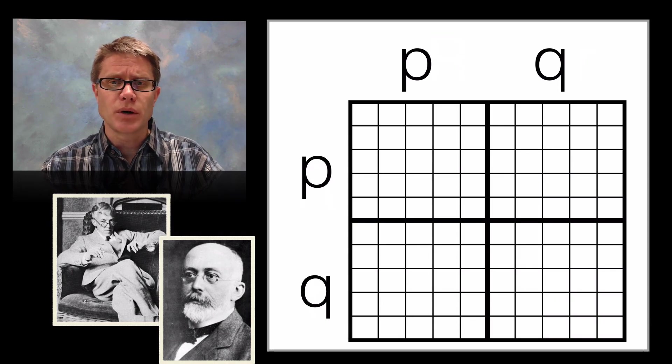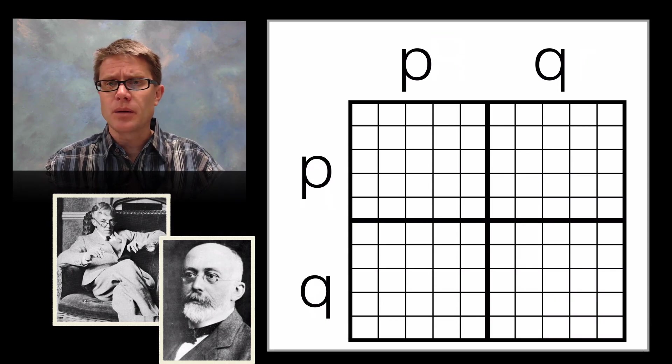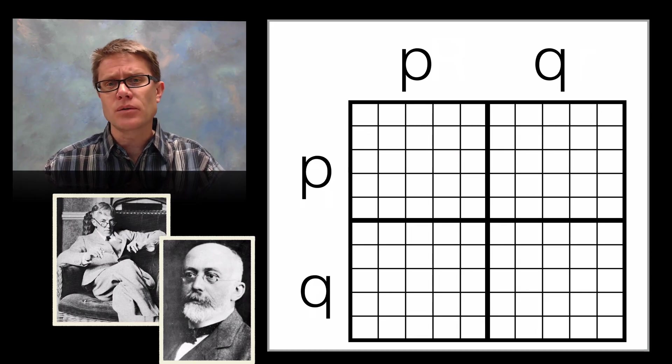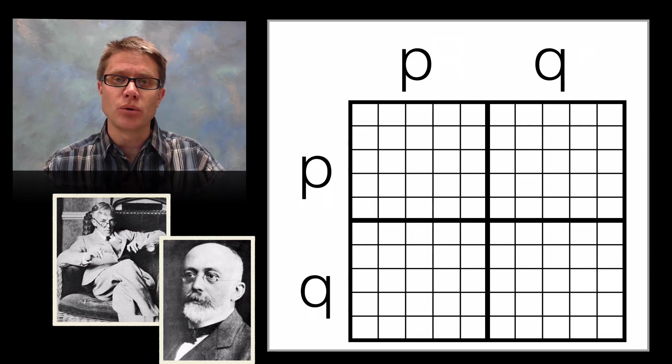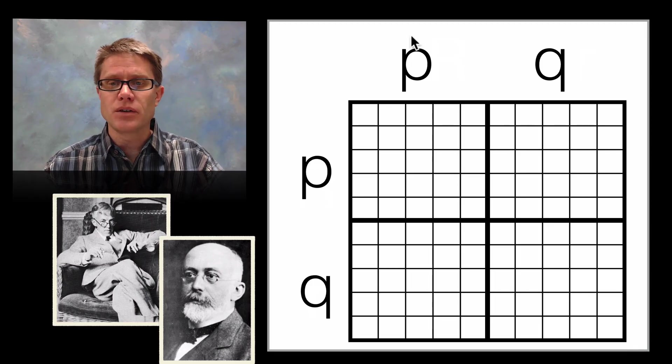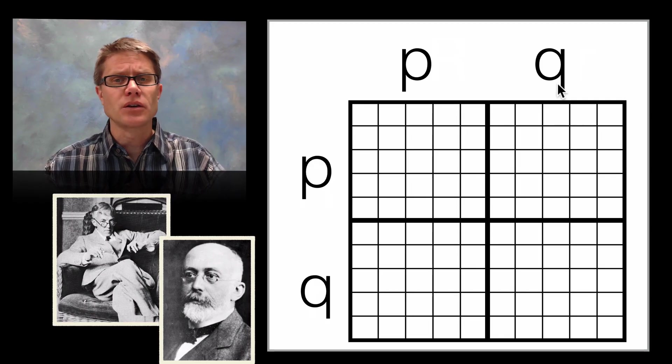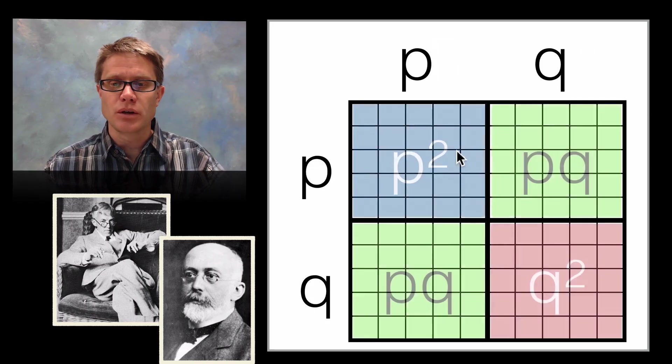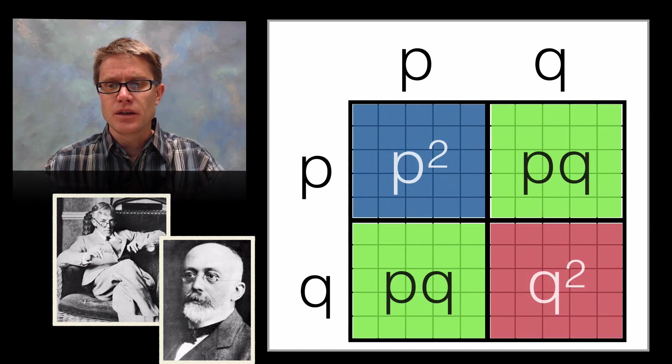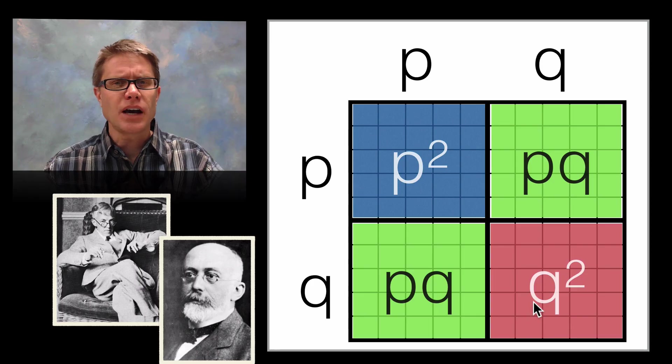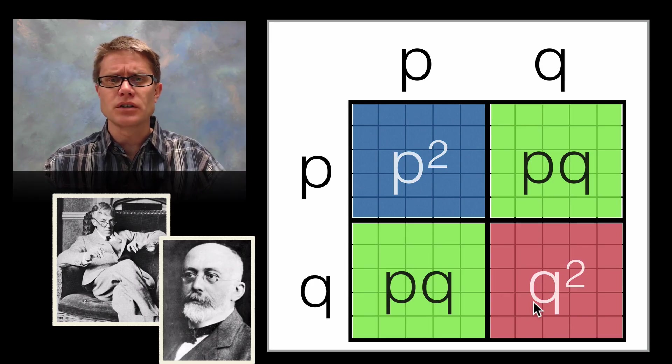And so this is that Hardy-Weinberg Punnett square. What do we put on the top and what do we put on the sides now? It's the frequency of the dominant and recessive gene in the gene pool itself. And so if I were to give you these p and q values, 0.5 and 0.5, you should be able to figure out what's in each of those big boxes. In other words what's going to be the p squared value, the 2pq value. Notice I have to multiply this times 2. And then in the q squared.